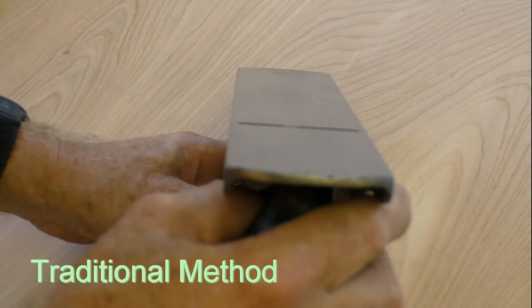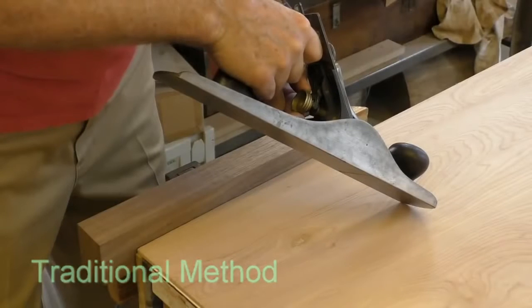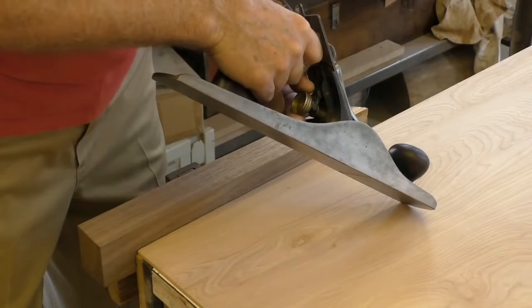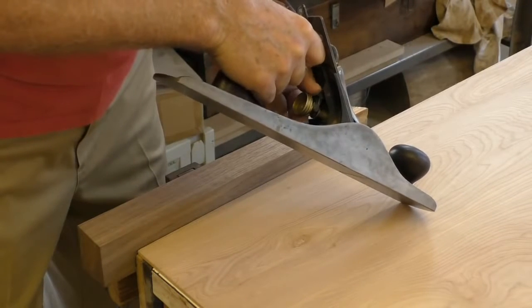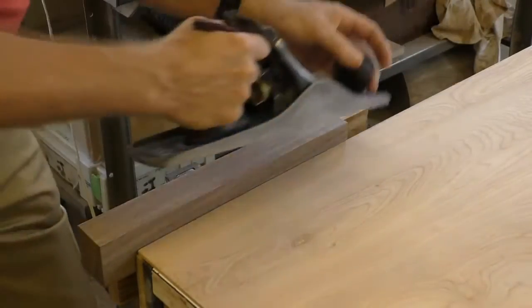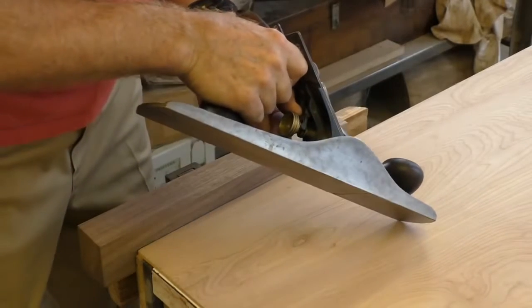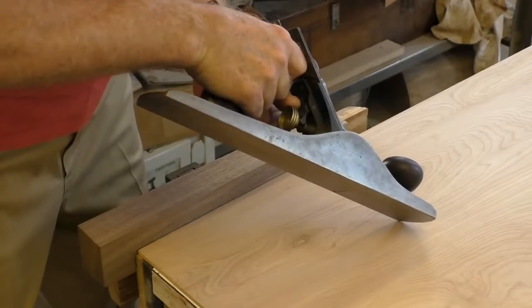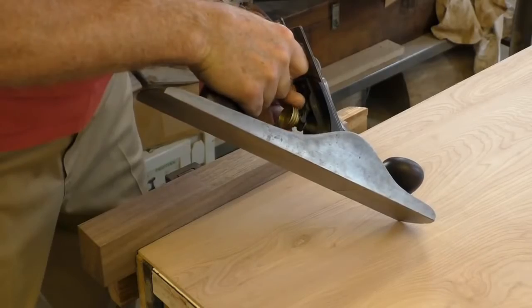Traditional methods for setting your plane iron require a series of tedious trial and error adjustments and test cuts. Sight down the plane's sole, adjust the depth, take a cut, adjust again, make another test cut, and yet another adjustment. And finally, you get to repeat the whole process until you're happy with the plane iron's lateral adjustment.